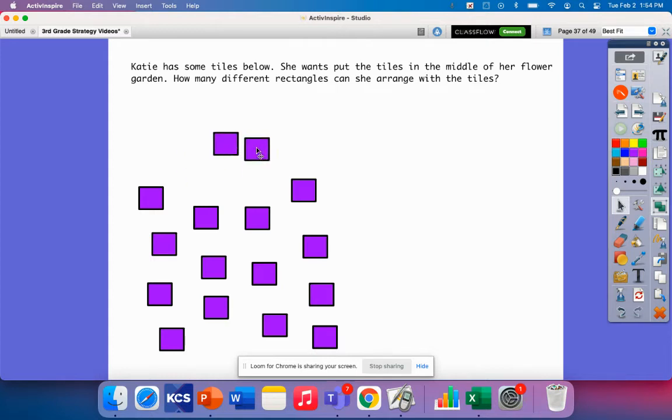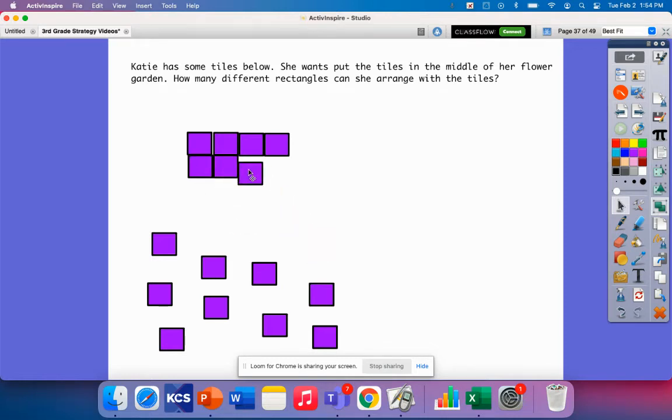So we're going to think of some different ways that we can arrange them. And they're not going to look exactly perfect. But I can have, let's see, four. Let me fill up four columns and then see how many rows that would be.